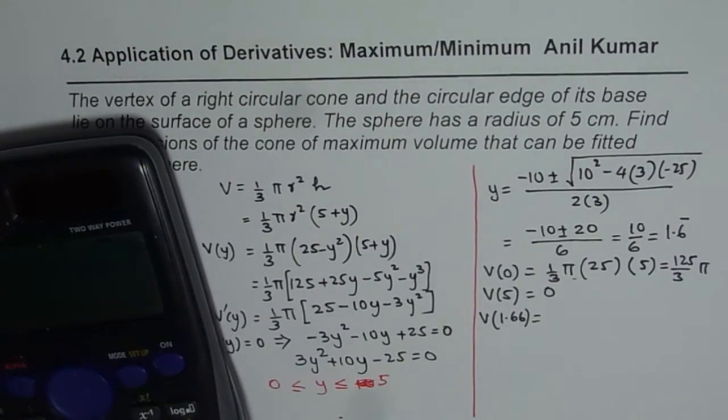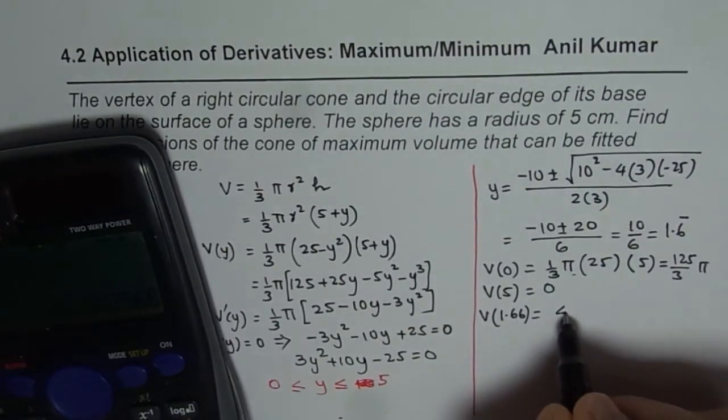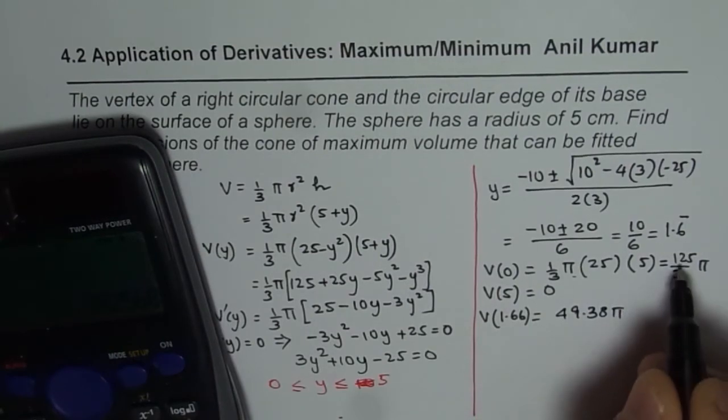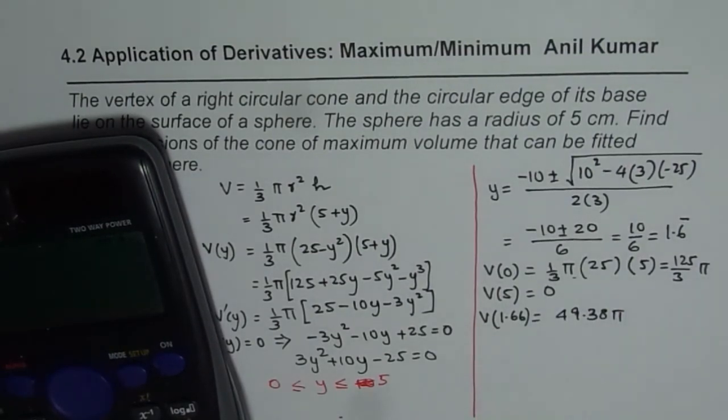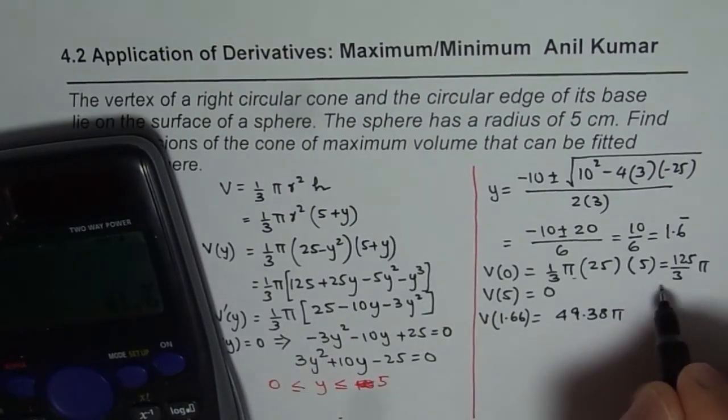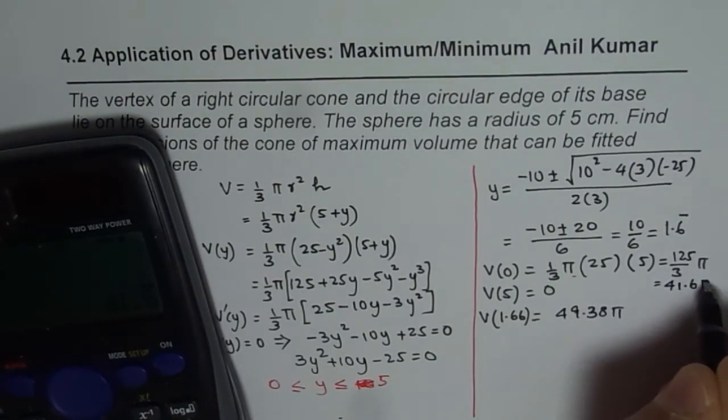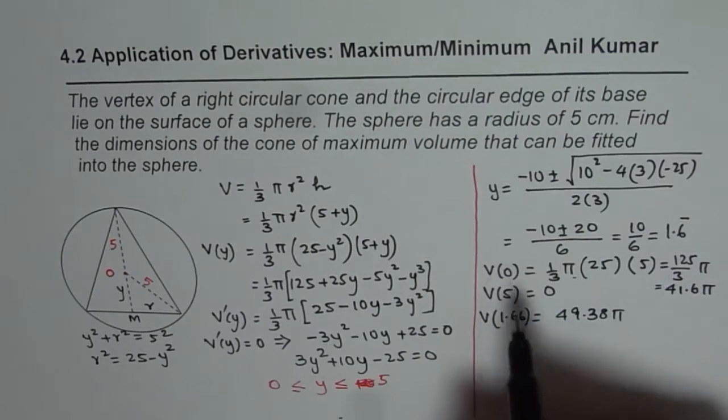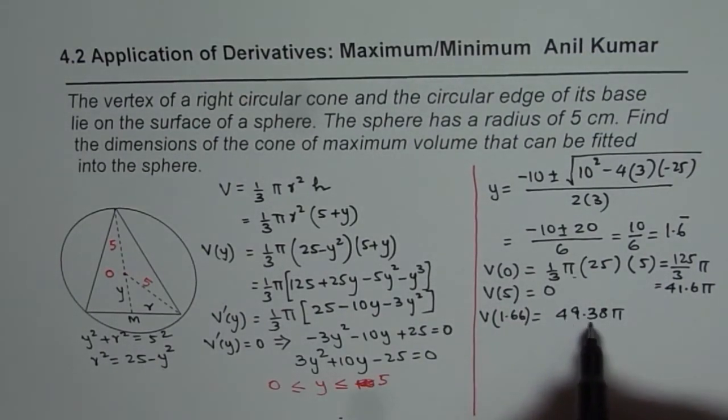So we have 25 minus 1.66 squared times within brackets 5 plus 1.66 divided by 3 equals to 49.38 pi. And how much is this? Because 125 divided by 3 is actually equals to 41.6. So this is 41.6 pi. So indeed we see that the volume is maximum for y equals to 1.66 and it is 49.38 pi. So that gives you the maximum volume for the current situation. This is one way of finding.